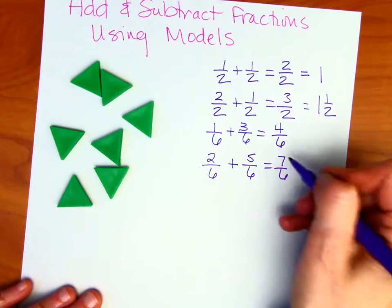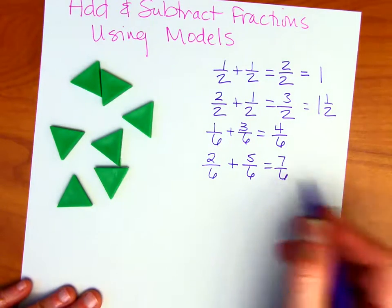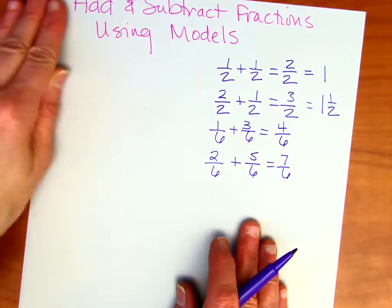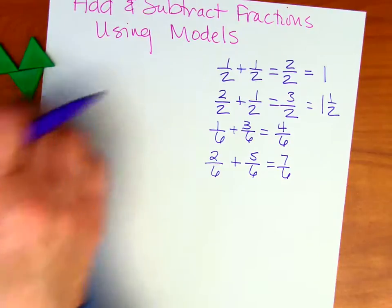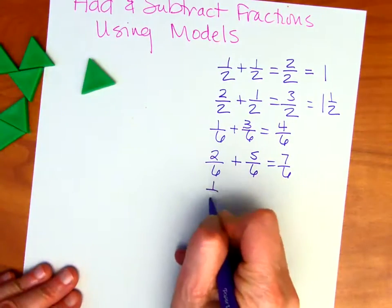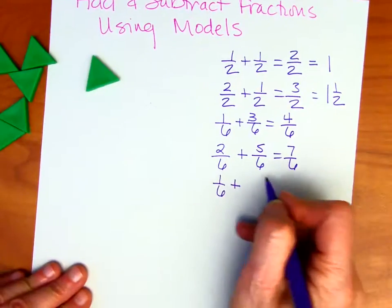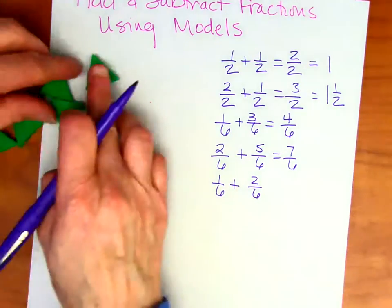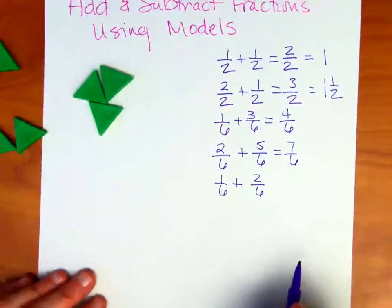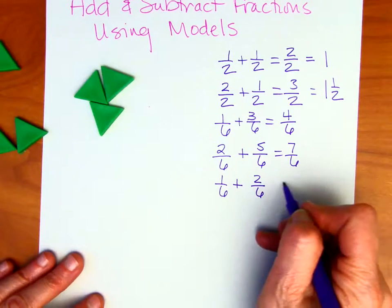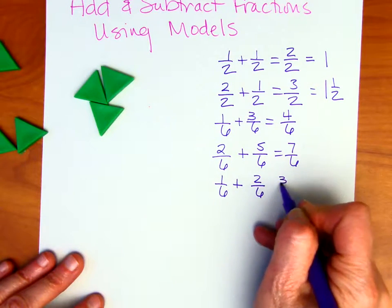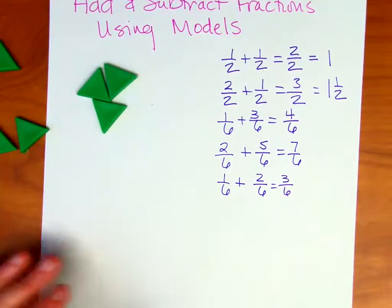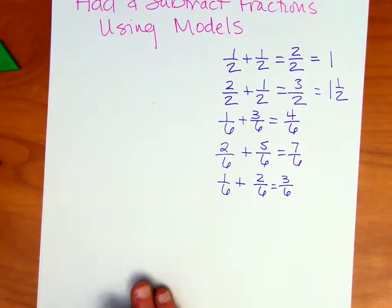Yes, I know I can convert that to a mixed number, but we're not focusing on that right now. Let's say I have one-sixth and I'm going to add to that two-sixths. So I'm going to add two more. How many does that equal altogether? Well, there's three of them, so there's three-sixths.